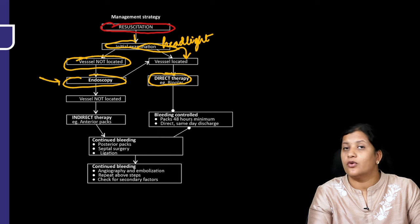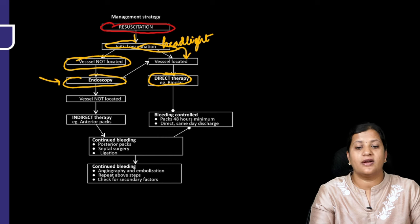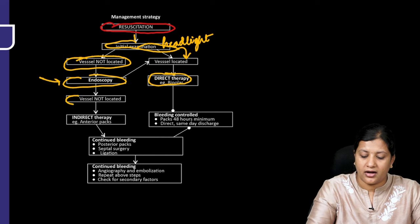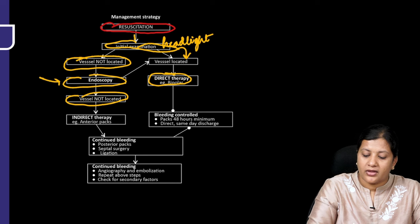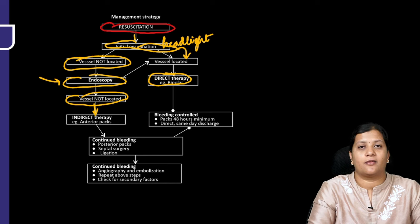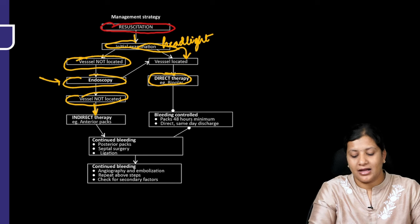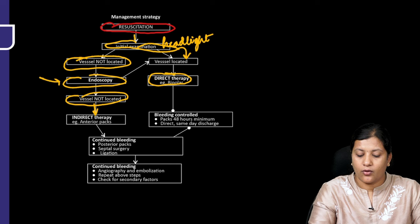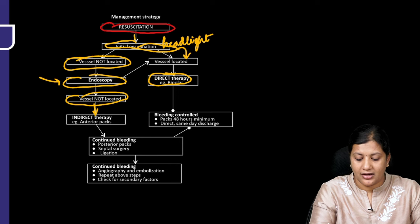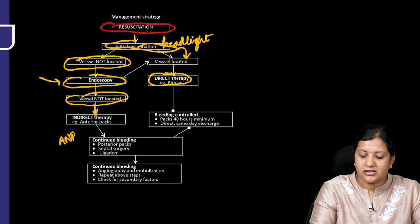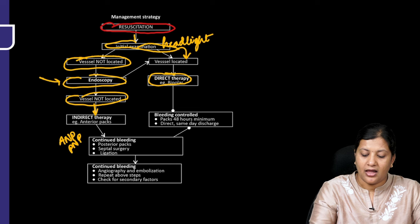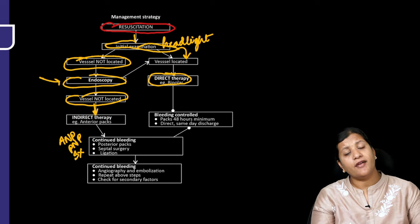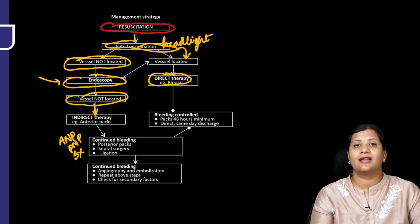On endoscopic examination, if you see the blood vessel directly, cauterize it. If the vessel is still not located, go for indirect therapy — anterior nasal packing. If this fails, proceed to posterior nasal packing. If that also fails, go for surgery and ligate the artery.